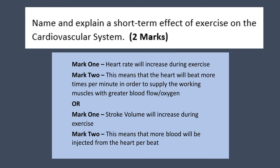Another answer you could have given is increased maximum cardiac output. Cardiac output is stroke volume times heart rate, which means it's the amount of blood pumped out of the heart each minute — stroke volume is per beat, cardiac output is per minute. The reason this is a bit harder to explain is because you need to have said maximum cardiac output specifically. This refers to our cardiac output during maximal exercise. You can't just put increased cardiac output because this doesn't actually change much at rest. You've got to talk about maximal intensity — but if you did put maximum cardiac output, then you can give yourself a mark.